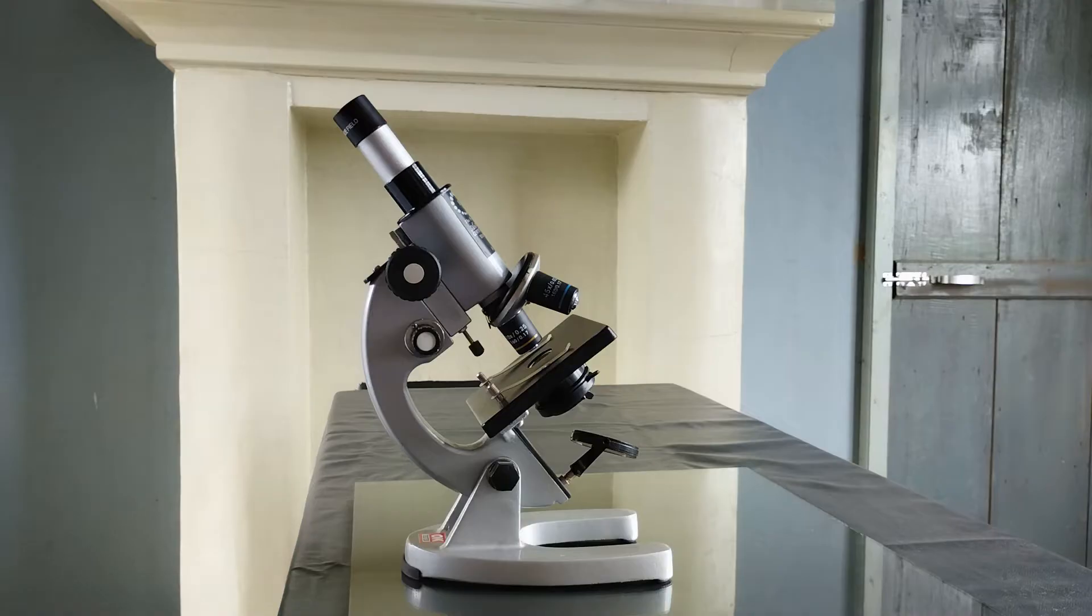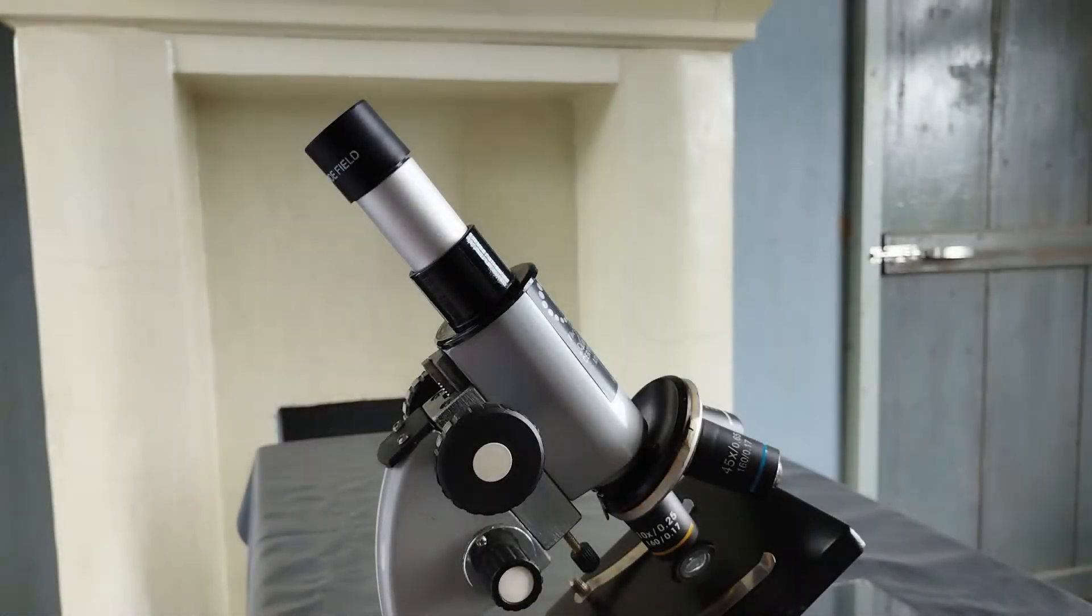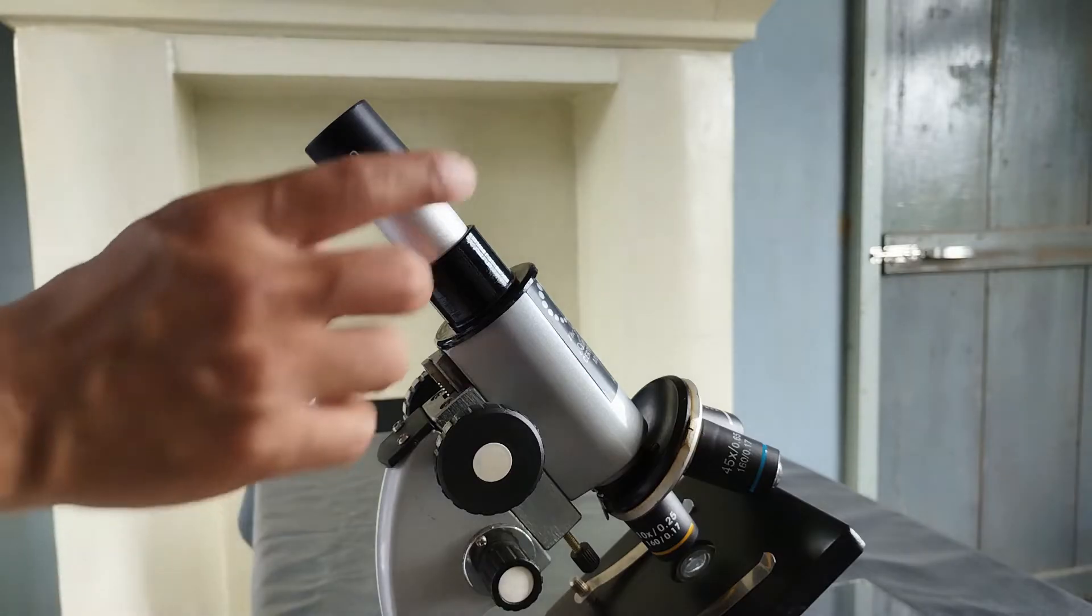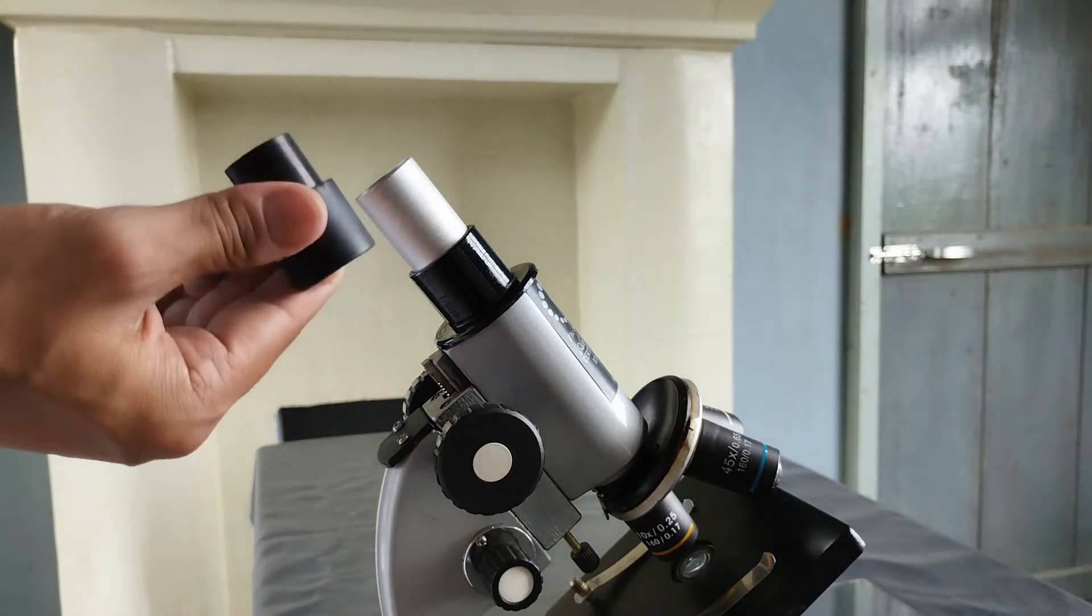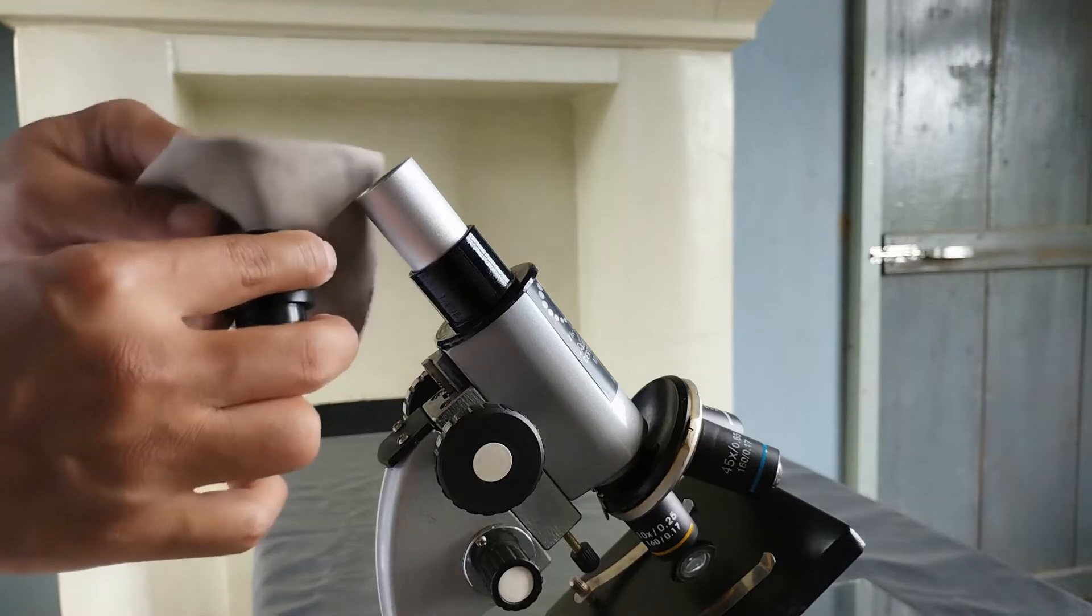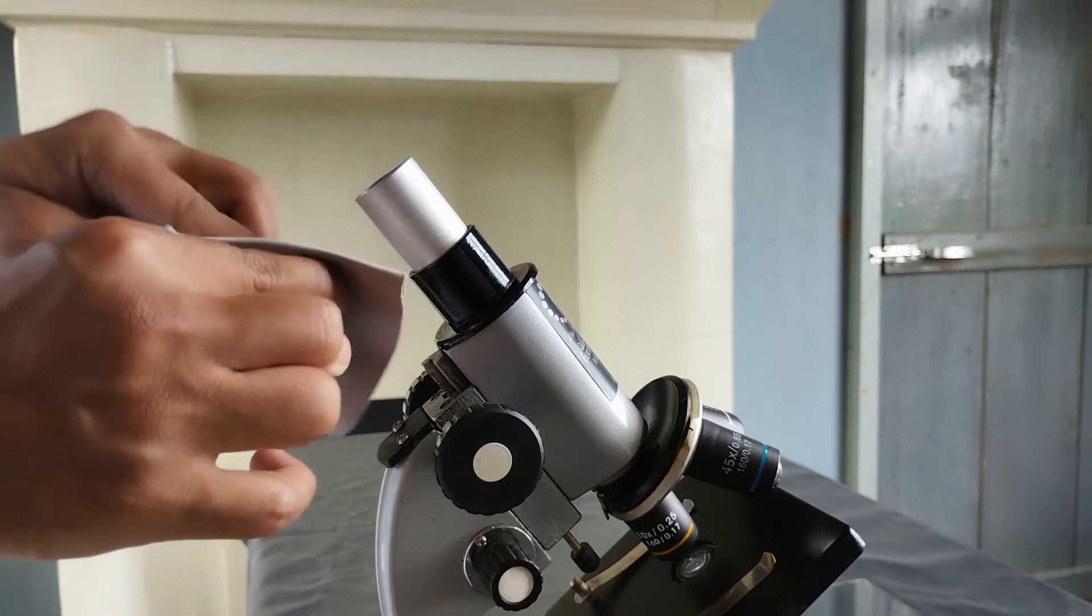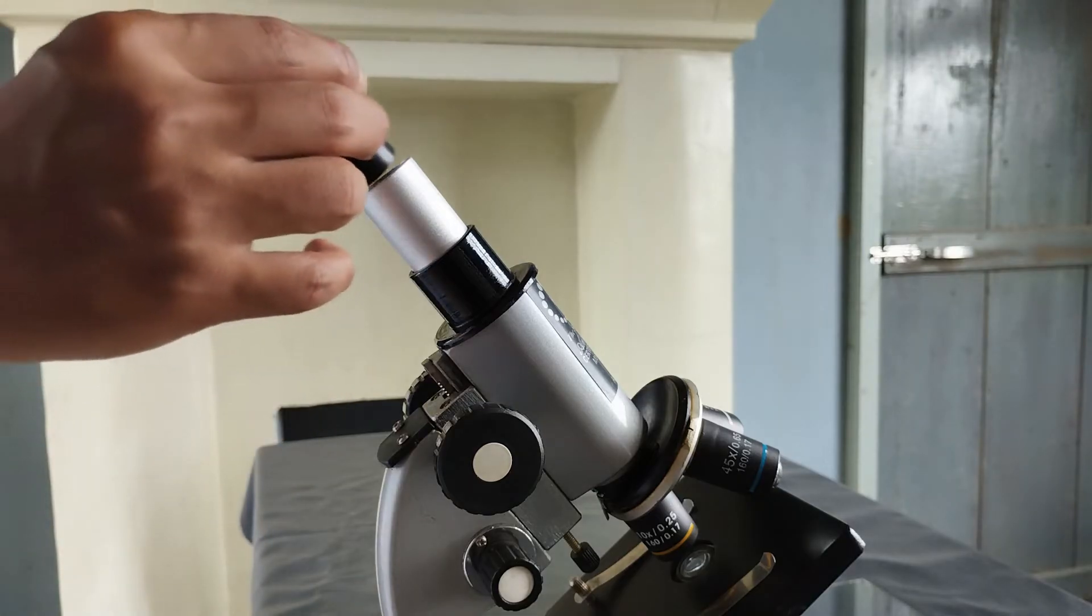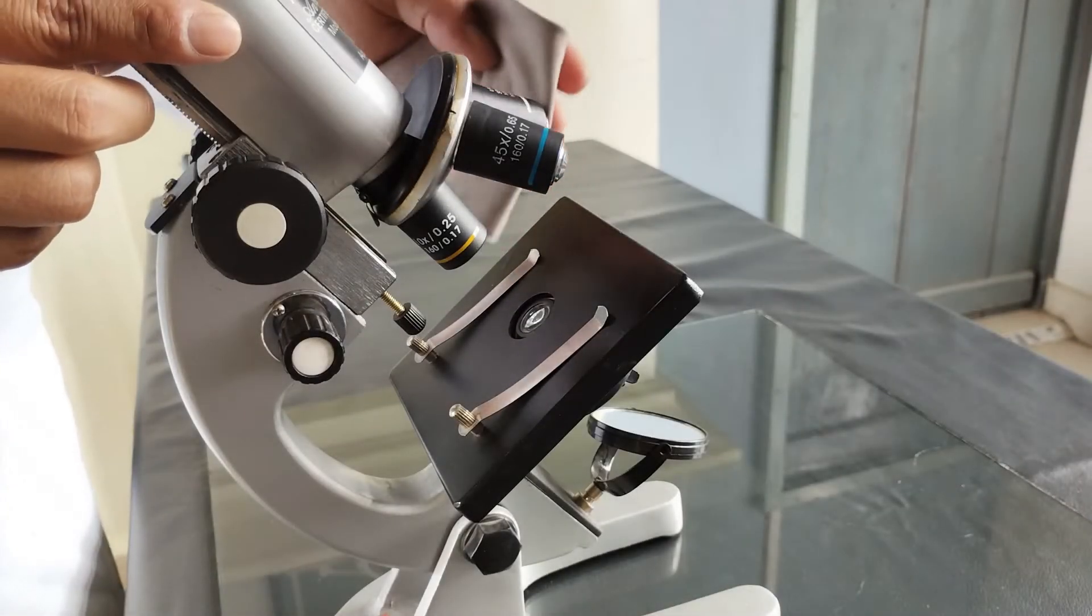Once the microscope is correctly positioned, the first thing you need to do is to check the eyepiece or ocular for dust and dirt. For this, remove the eyepiece from its position and check both the upper and lower lenses for dust and dirt. If present, use a lens cloth or lens paper to wipe it clean. Reinsert the eyepiece into the ocular tube once cleaned. Clean the external or front lenses of the objectives as well.